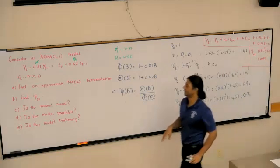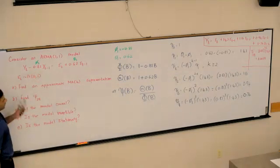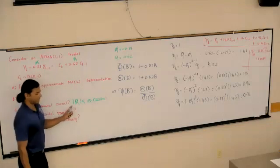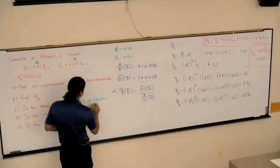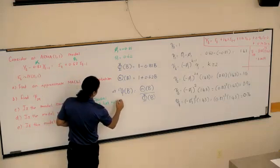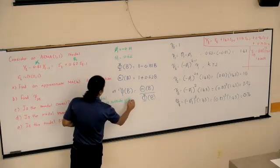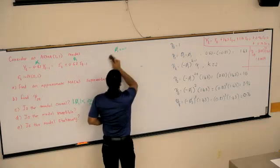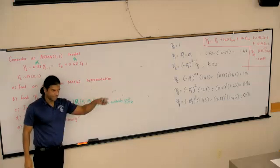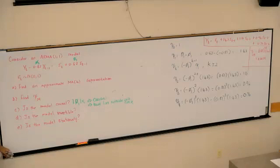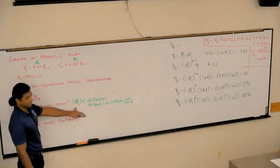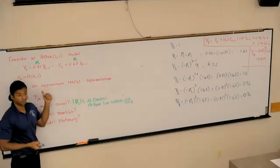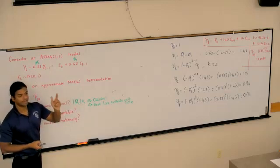How do we determine causality? The AR side, since the absolute value of phi1 is less than 1, it is causal. This is equivalent to saying that the root lies outside the unit circle. This is easy here because it's an AR(1) case, but if it is AR(2), AR(3), all of this we have to solve to determine if the roots lie outside the unit circle.